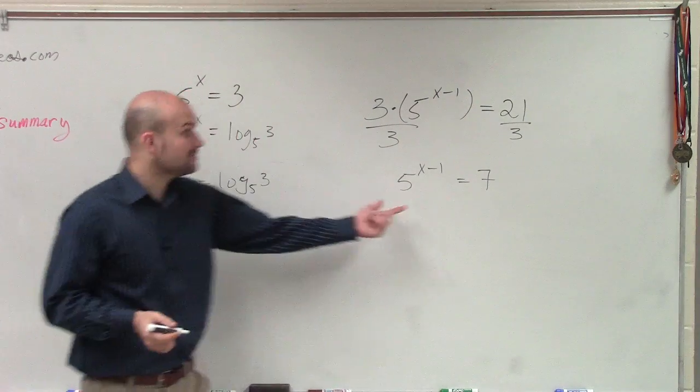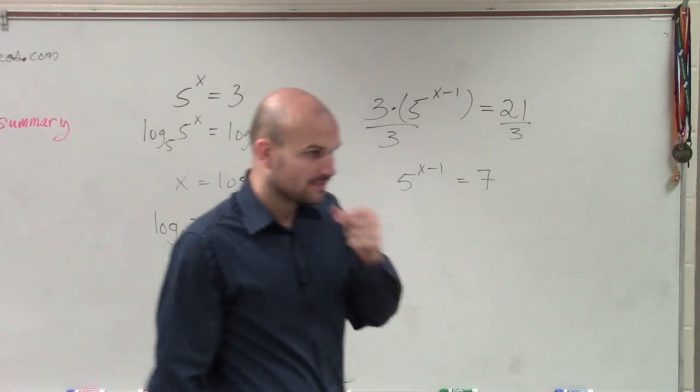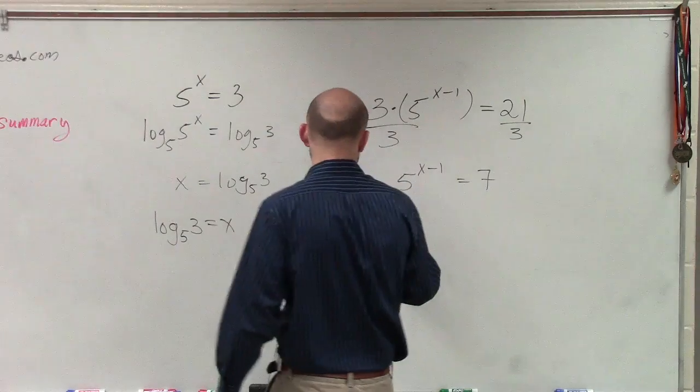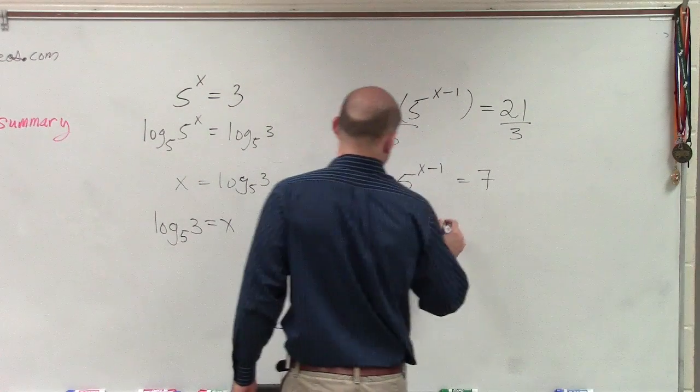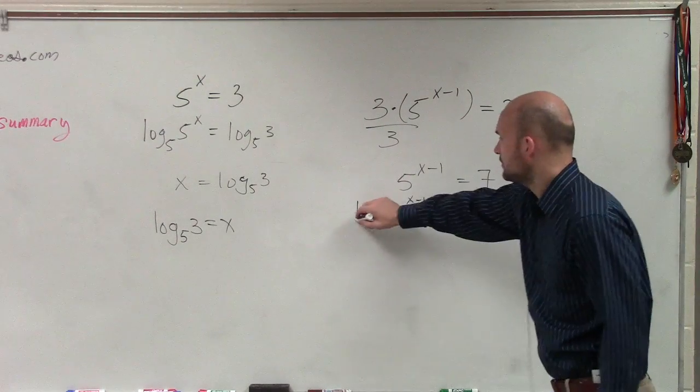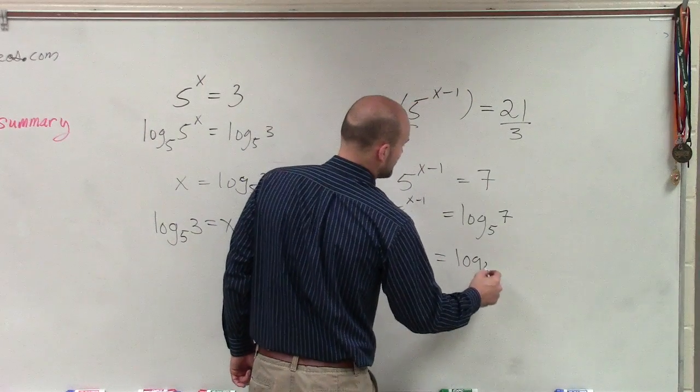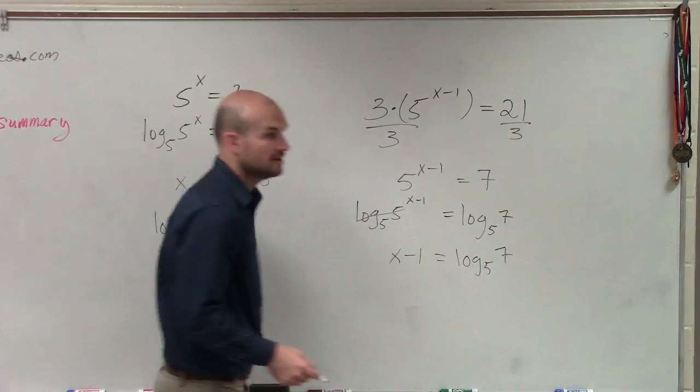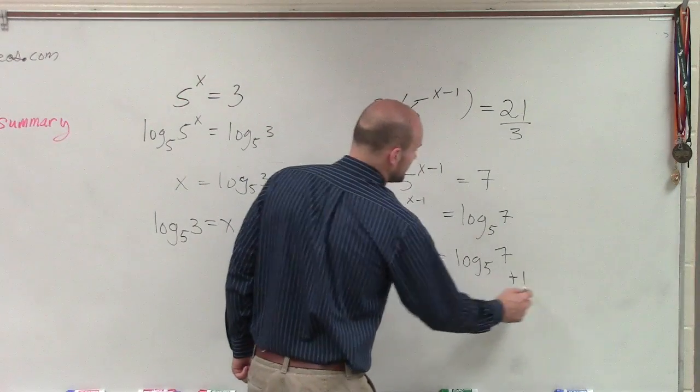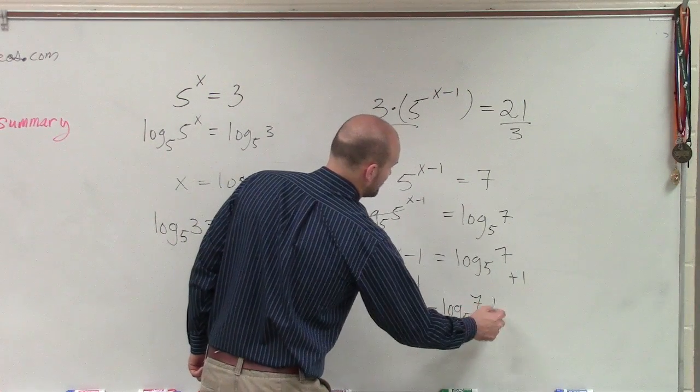Now I have something similar to this, but it just has the x minus 1. But that's OK, because what I can do is take the log base 5 on both sides. Therefore, now x minus 1 equals log base 5 of 7. Then to solve for x, all I can simply do is add 1 on both sides, so x equals log base 5 of 7 plus 1.